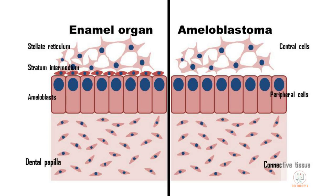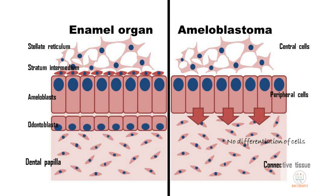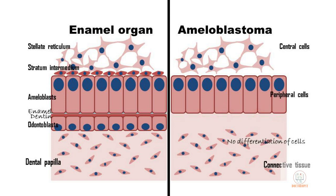It is theorized that the ameloblastic tumor cells, in an attempt to complete their embryologic function to produce enamel, signal the connective tissue to induce dentine formation. However, the fibroblastic cells in the connective tissue are unable to differentiate into odontoblasts and are thus able to show only hyalinization.